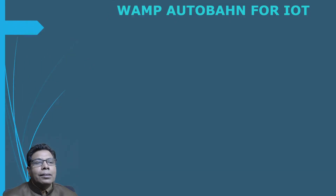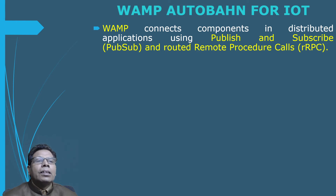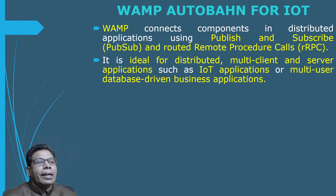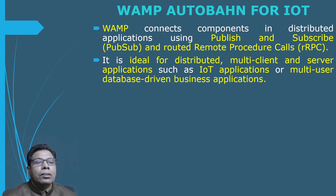WAMP connects components in distributed applications using Publish-Subscribe (pubsub) and Routed Remote Procedure Call (RPC). It is ideal for distributed multi-client and server applications. In IoT, applications are multi-client and distributed, which is why WAMP is more suitable for IoT applications. It can also be used for multi-user database-driven business applications.